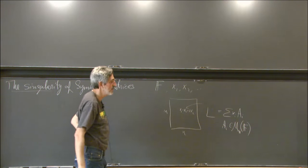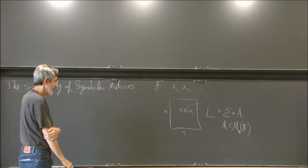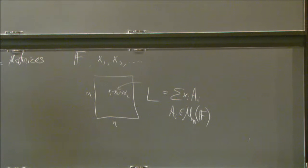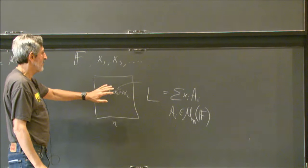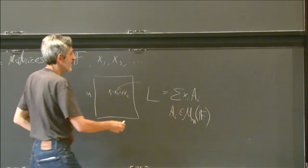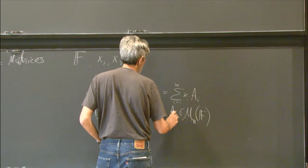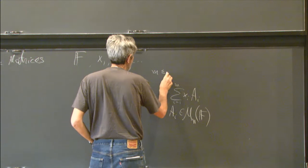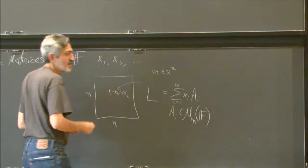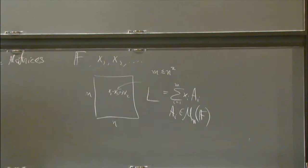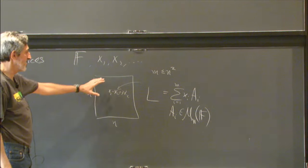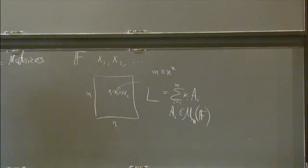We just separate out the coefficients of every variable. Maybe there are M such matrices, but M is always going to be less than N squared. I will just care about bounds that are polynomial in N, so M will not be too important — some number between N and N squared.